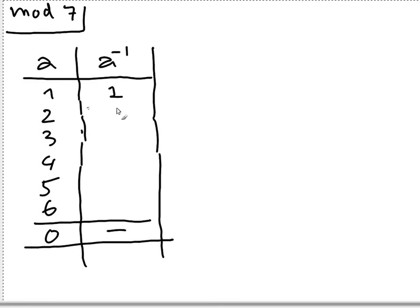For 2, 2 times 1 is 2, 2 times 2 is 4, 6, 8 which is 1. So the inverse of 2 is 4. Now since 2 times 4 equals 4 times 2 and both equal to 1, so we get this for free.